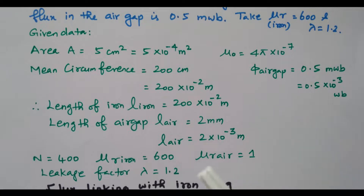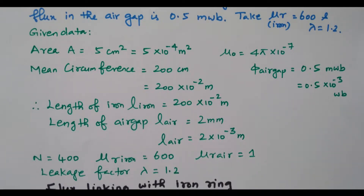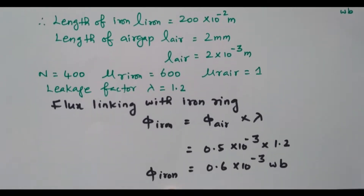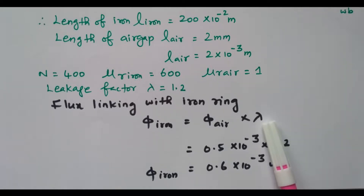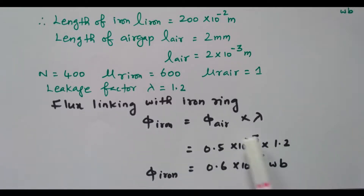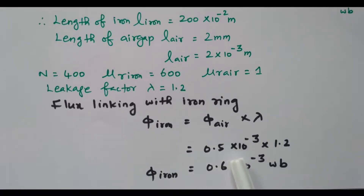We need to find the exciting current. First we find the flux linking with the iron ring. The flux linkage formula gives φ_iron equal to φ_air times λ. So φ_iron equals 0.5 × 10⁻³ times 1.2, which gives the flux in the iron as 0.6 × 10⁻³ Weber. Now we will proceed to find the current value.